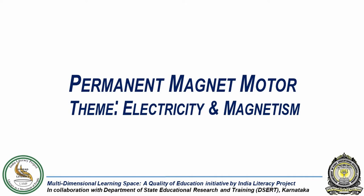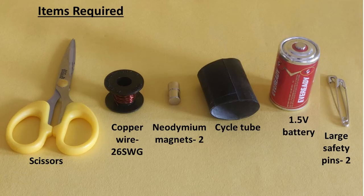In this experiment we will build a model of a motor. For this we will need a pair of scissors, copper wire 26 standard wire gauge or higher, ring magnets or neodymium magnets, a cycle tube, a 1.5 volt battery and two large safety pins.